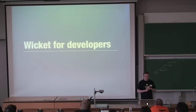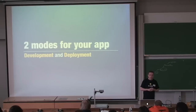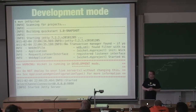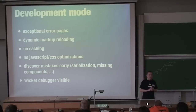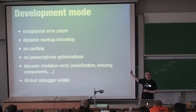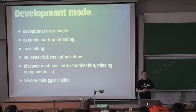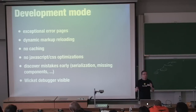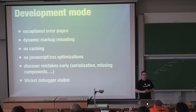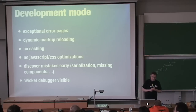Wicket has two modes for running your application: development and deployment. In development mode (the default), you get a big red error message on errors, nice error pages with full stack traces, dynamic markup reloading, no caching, unminified CSS and JavaScript, and the Wicket debugger is prominently shown. It's tuned for developers to discover programming mistakes early, like serialization errors or missing components.